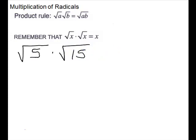Let's look at some problems. First we have square root of 5 times square root of 15. We could go ahead and just multiply the 5 times 15, and we would have square root of 75, and then we would need to simplify. Another thing you can do is just write them under the radical and then break them down, rather than multiplying them first.